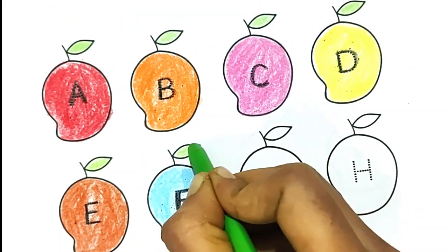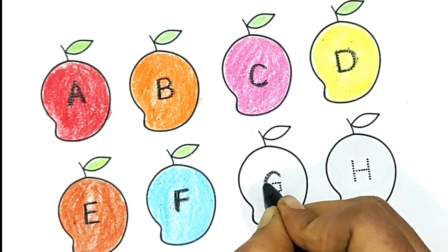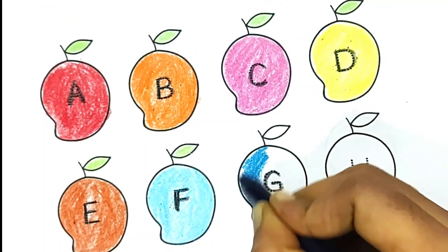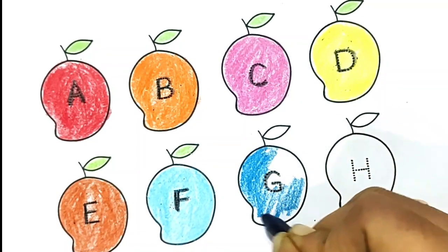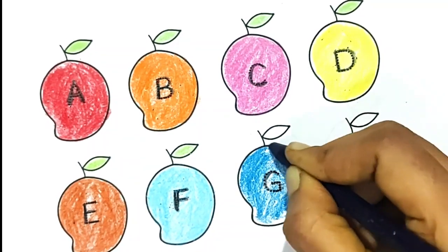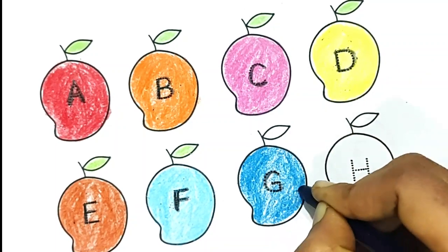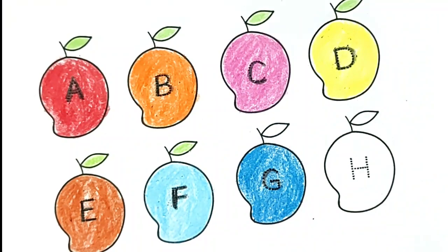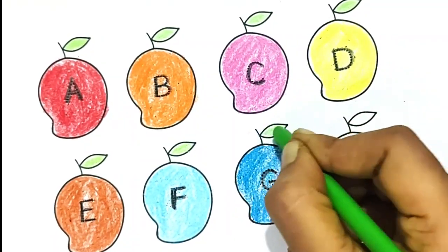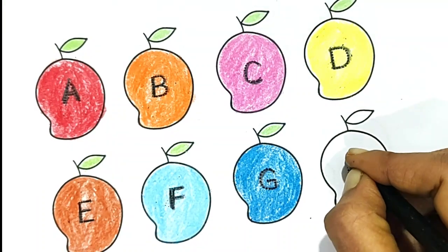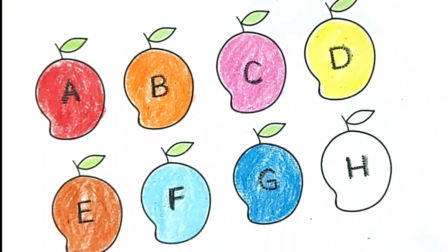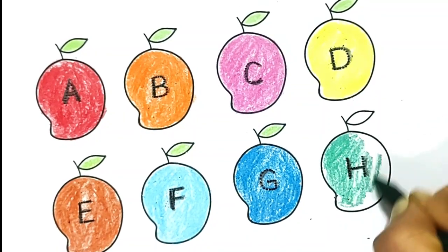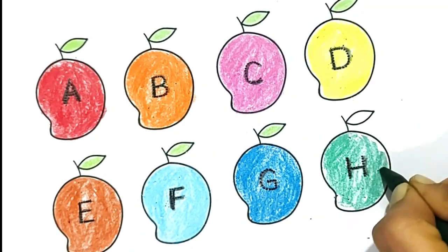Green color, black color, G violet color. Green color, H green color, H for horse.